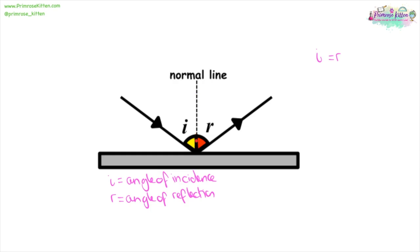Your normal line is in the middle here. It is a dashed line and it is drawn at 90 degrees to the mirror or the surface that the wave is being reflected off.